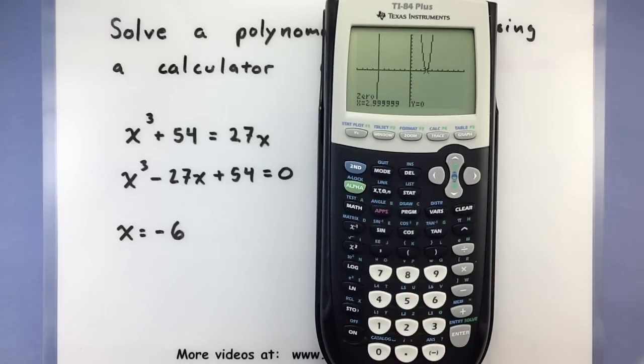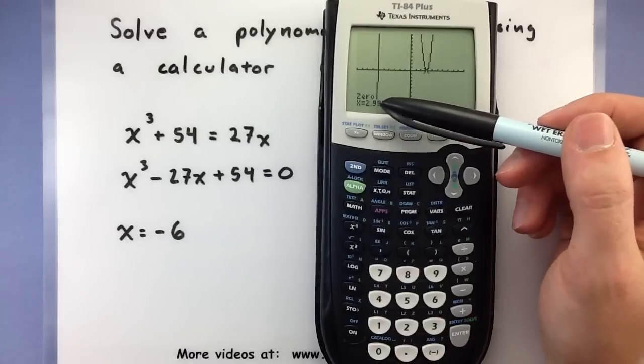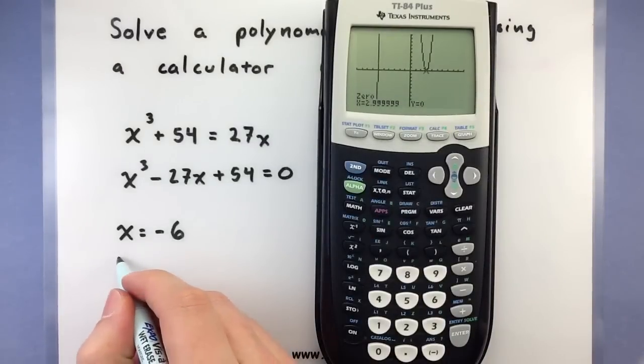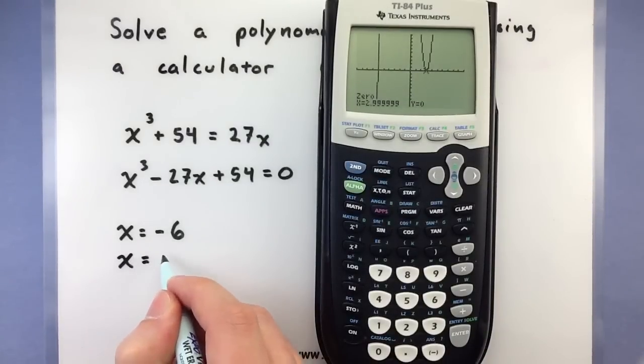Okay, calculator will think for a bit. It says it found it at 2.99999999. So we'll round that and say x equals 3.